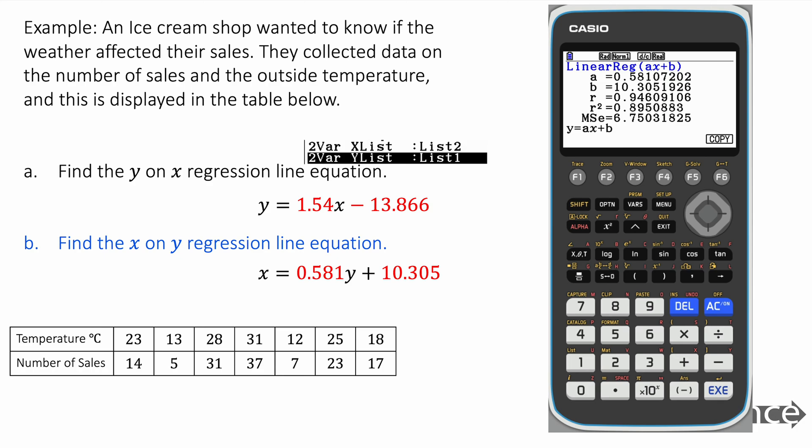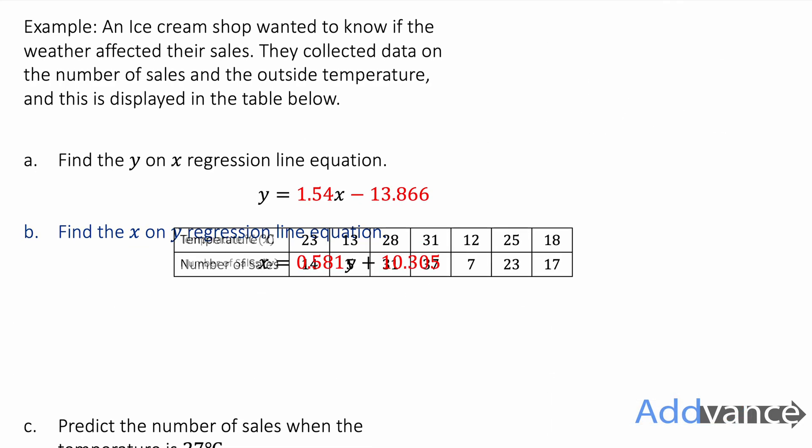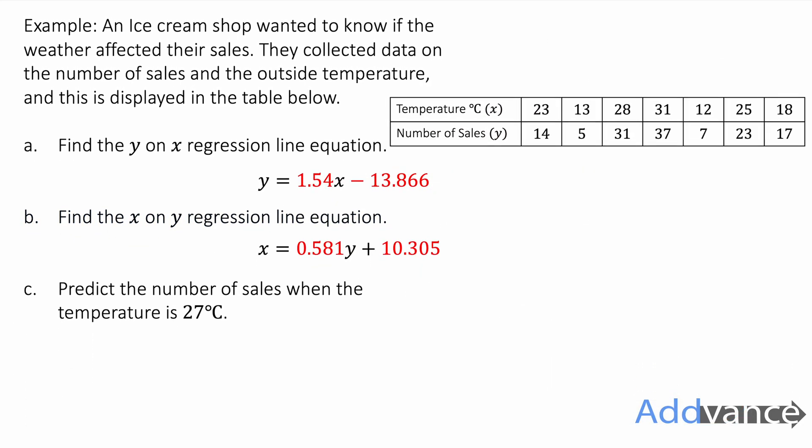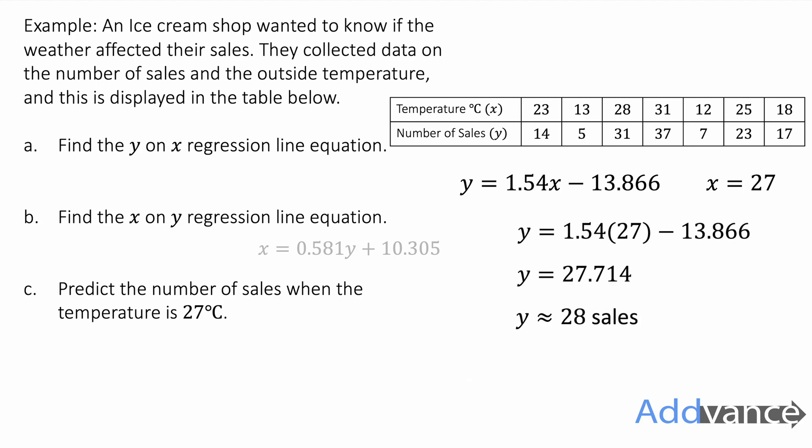Now let's move on. We can now find the number of sales when the temperature is 27 degrees. So the temperature is the x value. I'm going to put that into the equation like this. Substitute in 27. Tap this into our calculator and we get y is 27.7 or we can just call that about 28 sales because sales are measured in whole numbers.